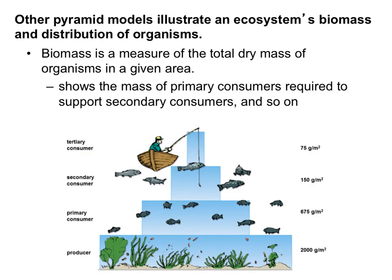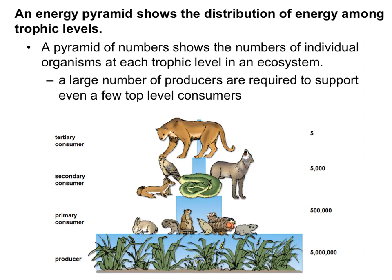There are two other pyramids we can look at. One is the pyramid of biomass — biomass is a measure of the total dry mass of organisms in an area, showing the mass of organisms required to support each successive trophic level. To feed a tertiary consumer like a human, we need more fish; to feed those fish, we need more fish below them; and to feed those, we need a ton of producers. A pyramid of numbers shows the same thing: if there are five mountain lions, there need to be about 5,000 secondary consumers, 500,000 primary consumers, and 5 million producers.